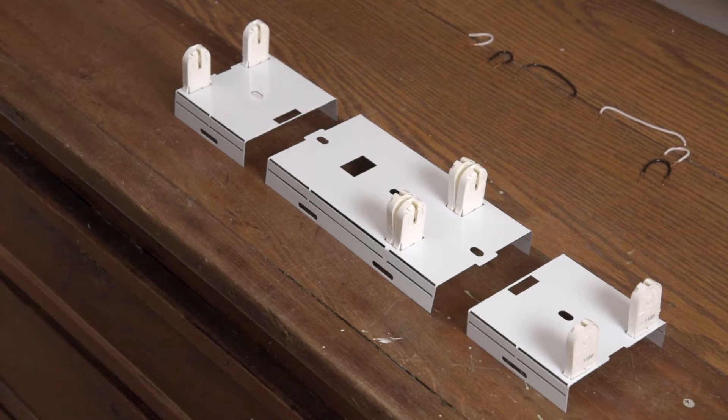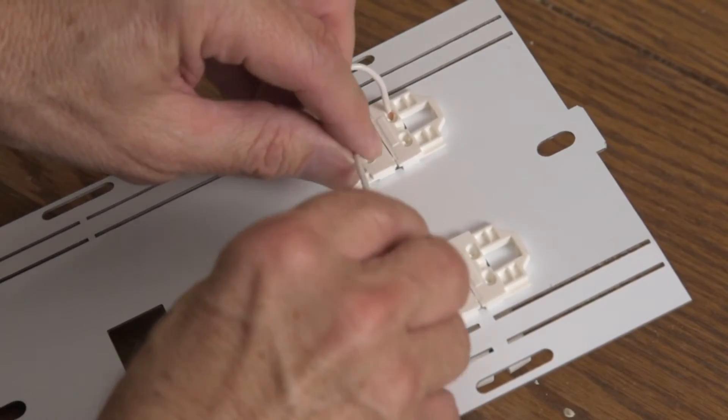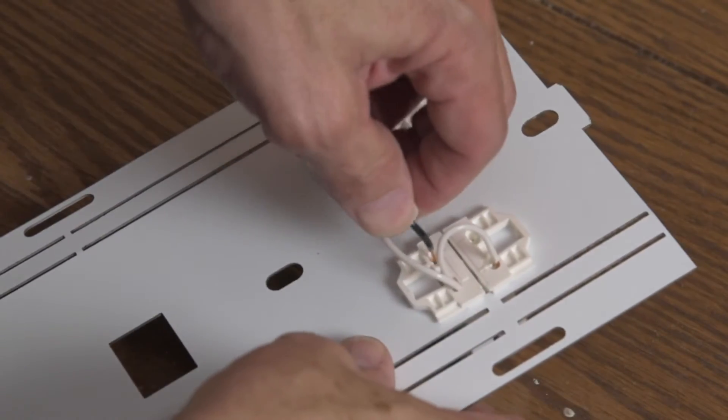Our LED tubes require power to just one end, so we suggest you wire the center sockets and use jumper cables to jump between the first, second, third, and fourth sockets for both the white and black wires.